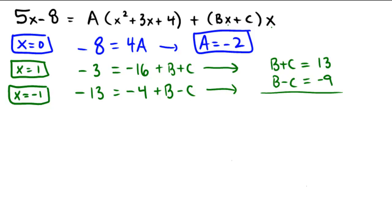Well, that's convenient, isn't it? Add those equations together. It looks like 2B equals, let's see, 13 minus 9 is 4, which would mean that B equals 2. And if we were to back substitute into this equation right here, we'd get 2 plus C equals 13.